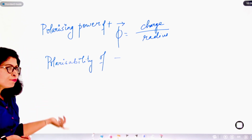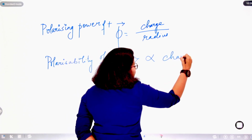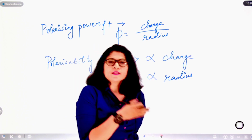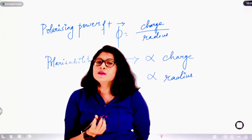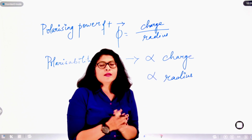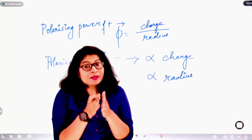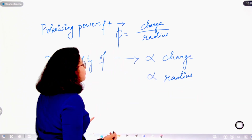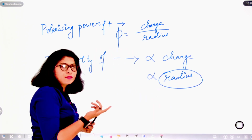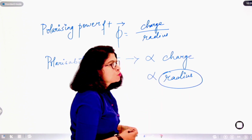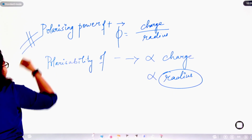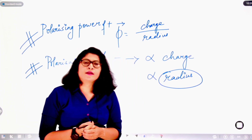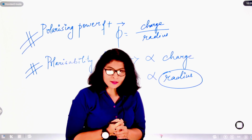The second factor is polarizability of the anion, which is directly proportional to both charge and radius. If the charge on the anion increases, its size also increases because anions are formed by gain of electrons. As size increases, the anion can be more easily distorted under the influence of the positive charge. Higher polarizing power of the cation and higher polarizability of the anion result in greater covalent character in the ionic bond. This is Fajans' rule.